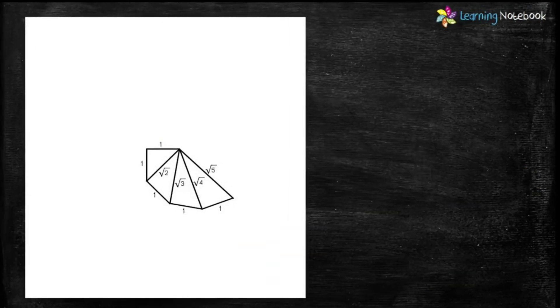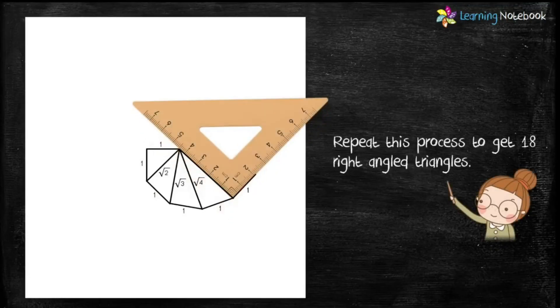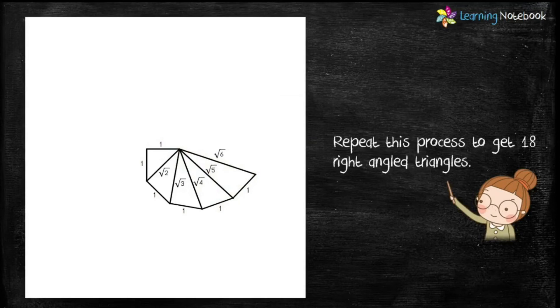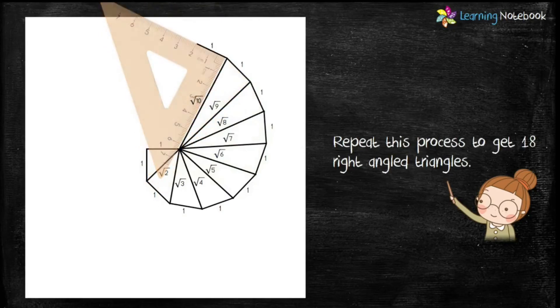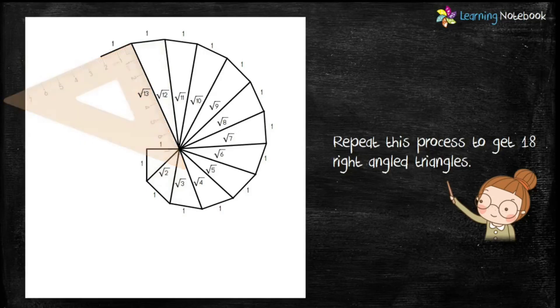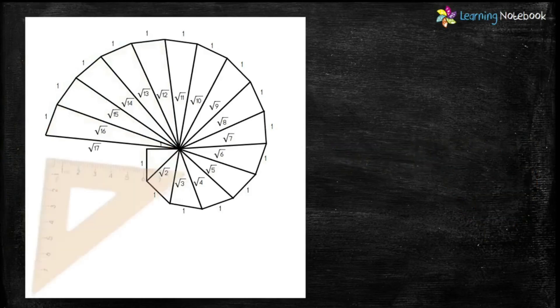Now repeat this process to get 18 right-angled triangles with hypotenuse as root 6, root 7, root 8, root 9, root 10, and so on till root 18. Students, this is called a square root spiral.